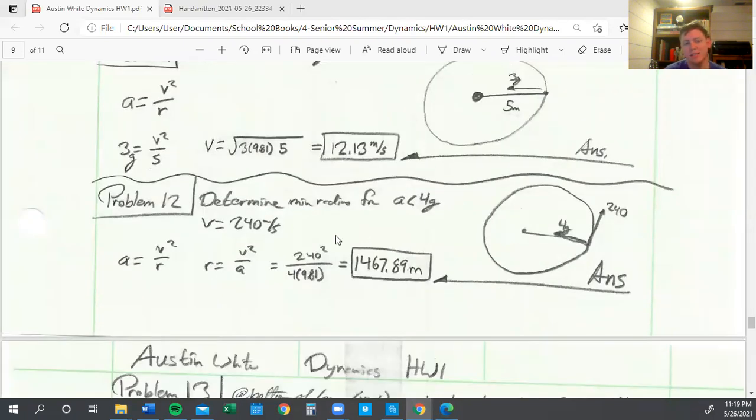Problem twelve is basically the same thing, but instead we were given our A and our V. We know it is 4G to the inside, so we just multiply our G by 4, which gives us our acceleration towards the center. We've got our tangential velocity and normal acceleration. We just plug those in to find our radius of 1,467.89 meters.